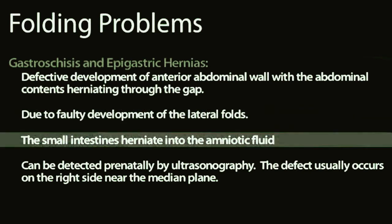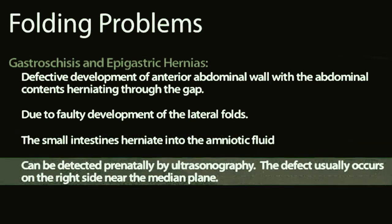The small intestines will oftentimes herniate into the amniotic fluid, and this can be detected prenatally by ultrasound. The defect usually occurs on the right side near the median plane of the umbilical cord.